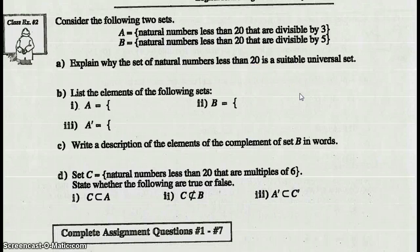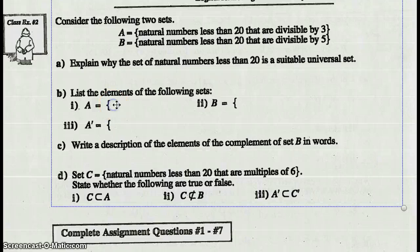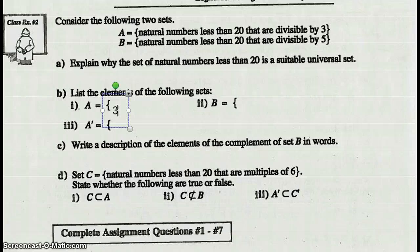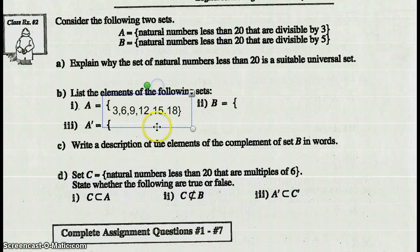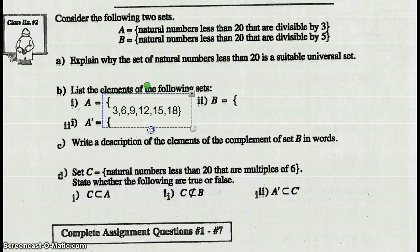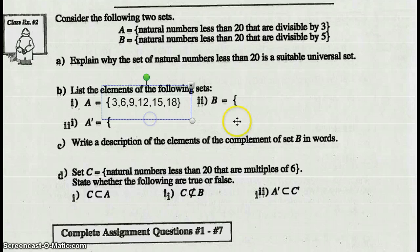List the elements of the following sets. Elements in set A: natural numbers less than 20 divisible by 3. That should be 3, 6, 9, 12, 15, and 18. Those are all the elements less than 20 divisible by 3.